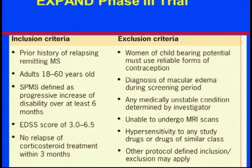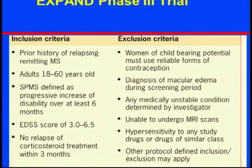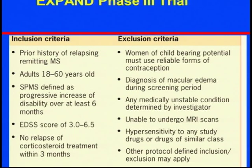To be enrolled, you would need to have secondary progressive MS. The age range is 18 to 60. There are exclusion criteria — the major ones include women of childbearing age, who need reliable contraception since we don't know how the drug affects fetuses. A potential side effect is macular edema, so ophthalmology exams are done at baseline. Other unstable medical conditions would also be exclusionary.